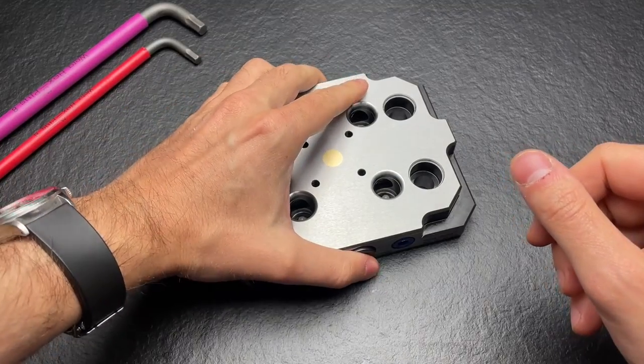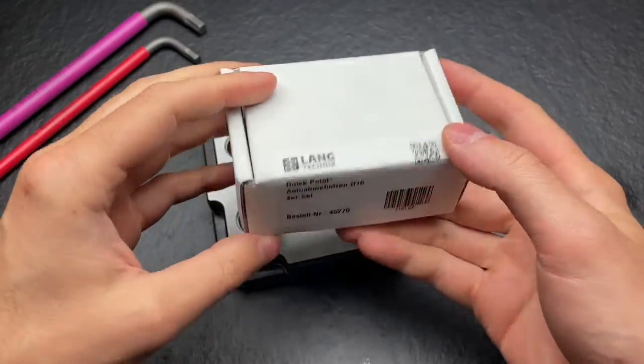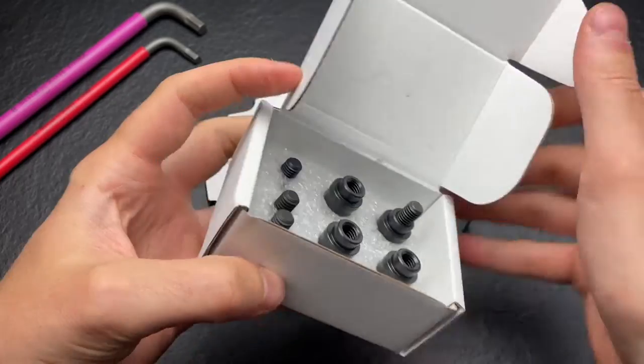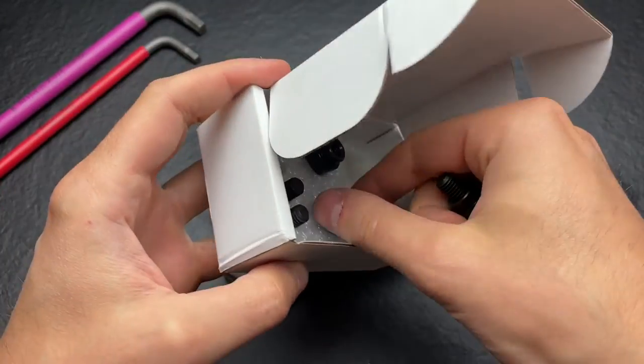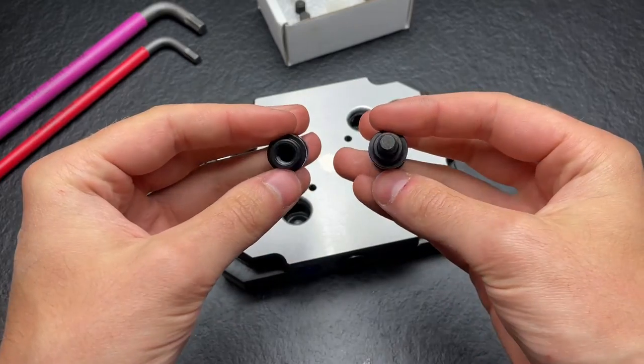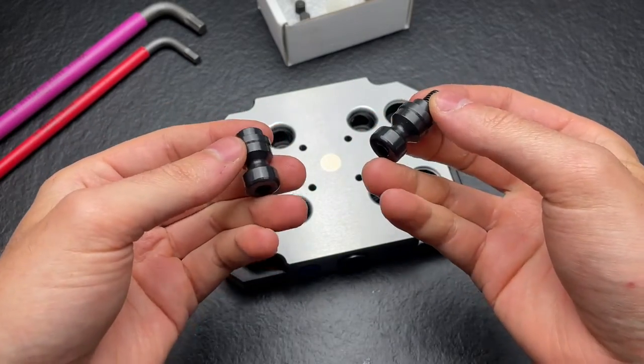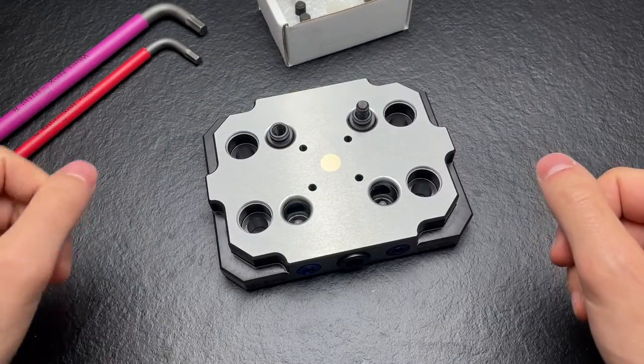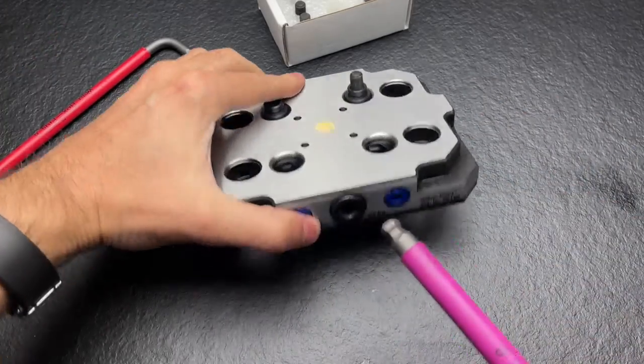So how does it work? You have these studs, four of them, and you screw them into a pallet, into an aluminum pallet, or into a vise. And then these go into the holes, and then you can actuate the system here.